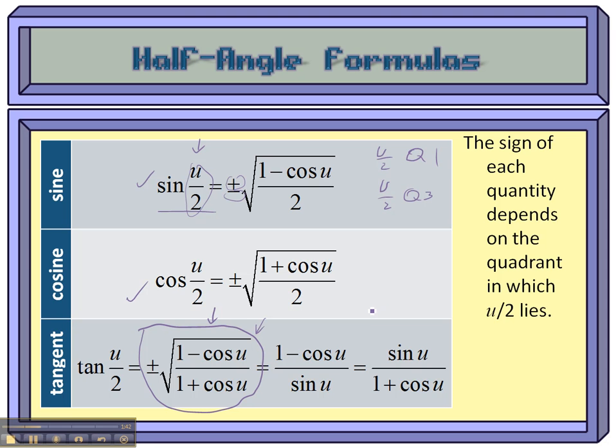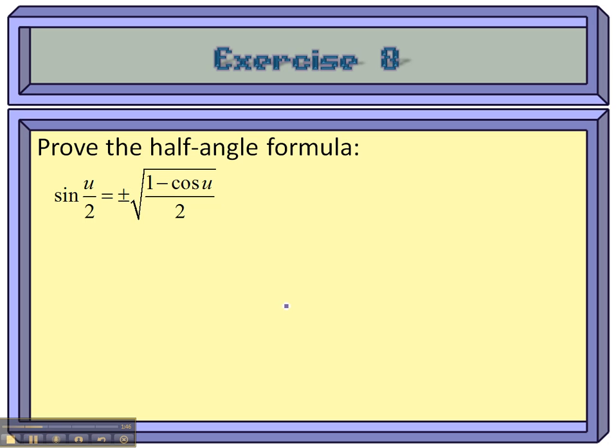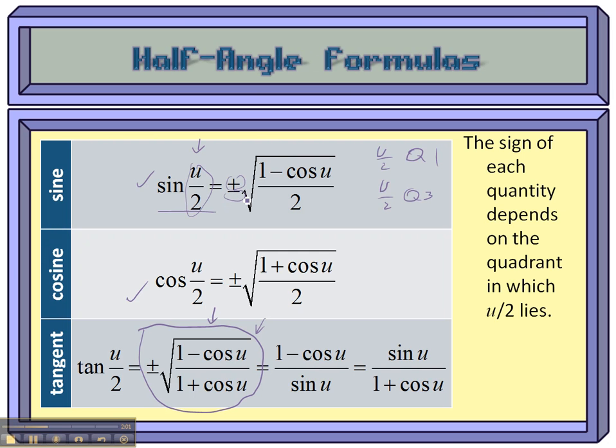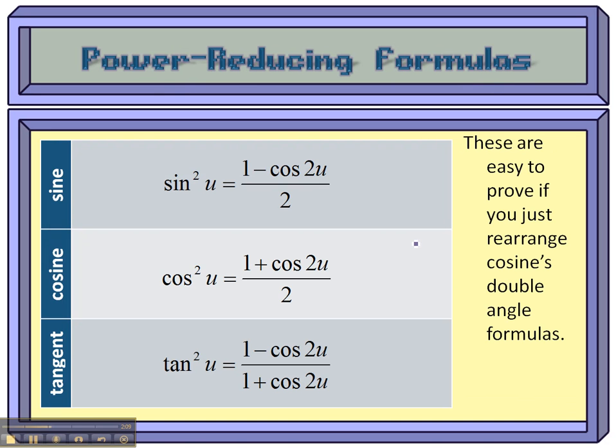So what we're going to do is prove one of these. I don't remember which one, and apparently it's the sine. To prove the sine of u over 2, notice that over here we've got just a u. Also notice that this kind of looks like the power-reducing formulas, taking the square root.